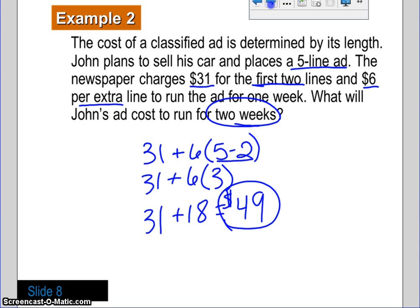So, we have 31 plus 18, so the ad's cost is $49. But, it's asking, remember, this is for one week. So, in order to get that to two weeks, it's very simple. We just take it and double it. Two weeks at $49 a week. So, my final answer is that it is $98 for the ad for two weeks.